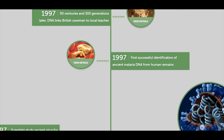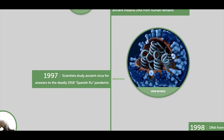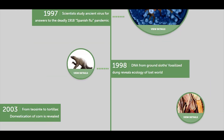In 1997, the first successful identification of ancient malaria DNA was made from human remains. Also in 1997, scientists studied ancient viruses for answers to the deadly 1918 Spanish flu pandemic. In 1998, DNA from fossilized ground sloth dung revealed the ecology of a lost world.